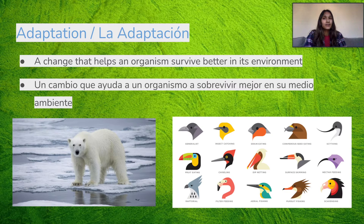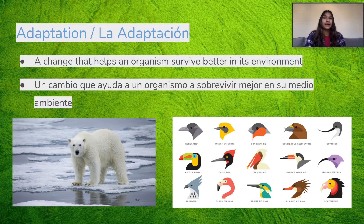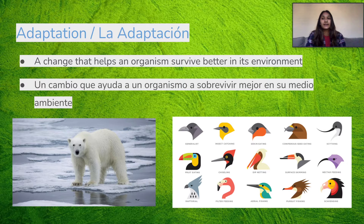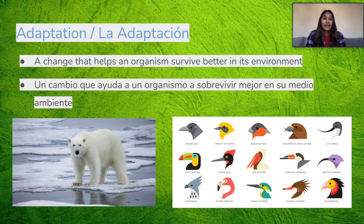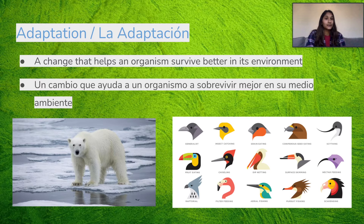So how do animals live in all these different ecosystems? Well, that is where adaptations come in. An adaptation is a change that helps an organism survive better in its environment. Some examples are a polar bear having a thick coat of fur to protect itself from the cold Arctic, and birds that have different sizes and shapes of their beak so they can eat different types of food depending on where they live in different ecosystems.